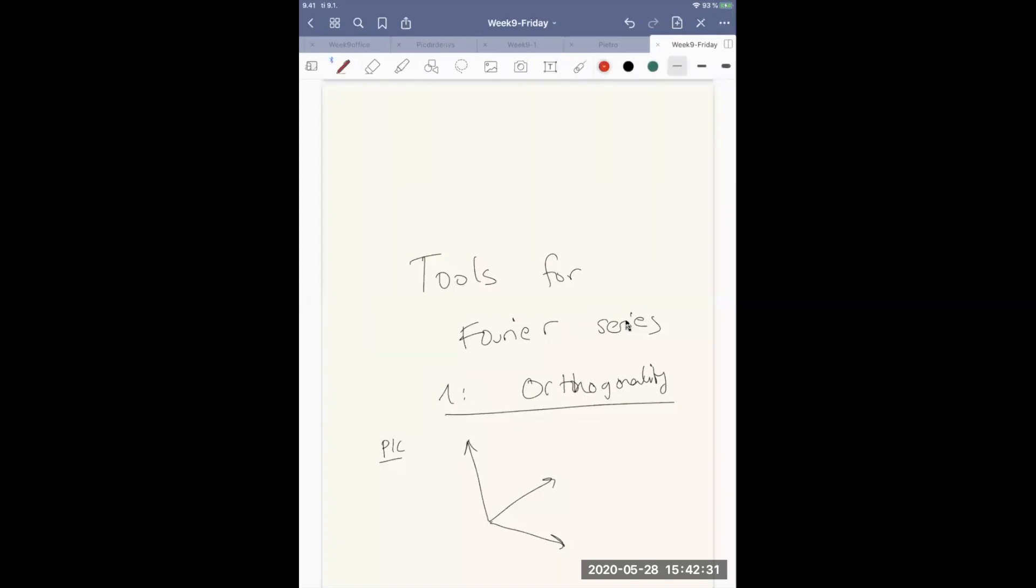Now the first tool that we need is orthogonality. In the standard vector space case, if we have a number of vectors v1, v2, v3, then the question is are they orthogonal to each other, meaning that vi dot vj, and I will usually use the bracket notation vi vj bracket, is equal to 1 if i equals j and 0 if they are different.